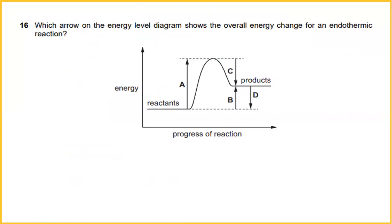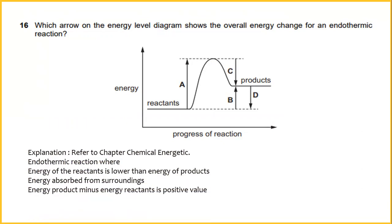Which arrow on the energy level diagram shows the overall energy change for the endothermic reaction? The explanation refers to chapter on chemical energetics where endothermic reactions happen when energy of the reactant is lower than energy of the product. Energy is absorbed from surroundings. Energy product minus energy reactant. And energy reactant is positive value. The answer is B.